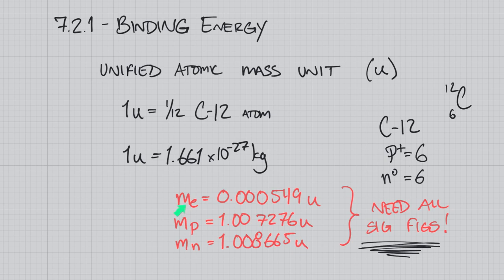We need to look at the mass of a proton, an electron, and a neutron in terms of atomic mass units. For an electron, it's incredibly small: 0.000549 U. The mass of a proton is 1.007276 U. The mass of a neutron is slightly larger at 1.008665 U. We do need all these significant figures — we can't round to three sig figs because these small values make a big difference.